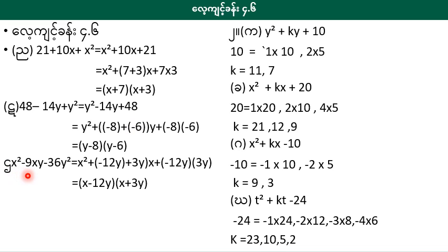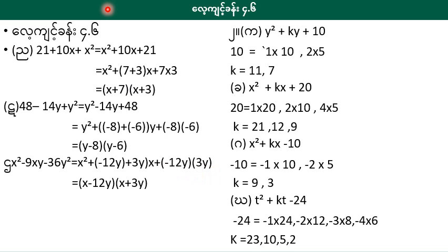x squared minus 9, x minus 36y squared. The line of second element is minus 9.1, minus 8 to minus 9. The line is minus 3y, minus 3y, minus 4y. S minus 3y the root, S minus 3y the root, S plus 3y the root.